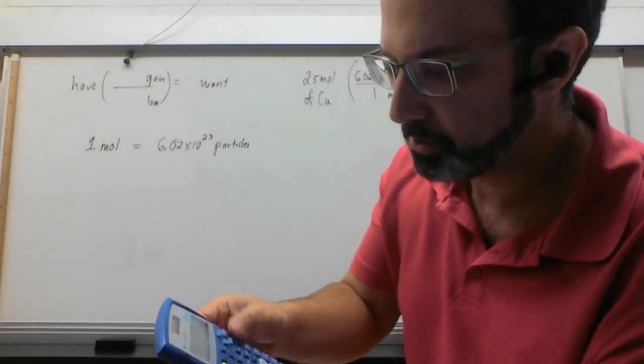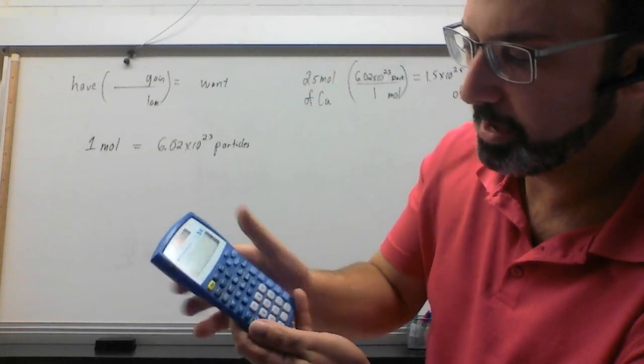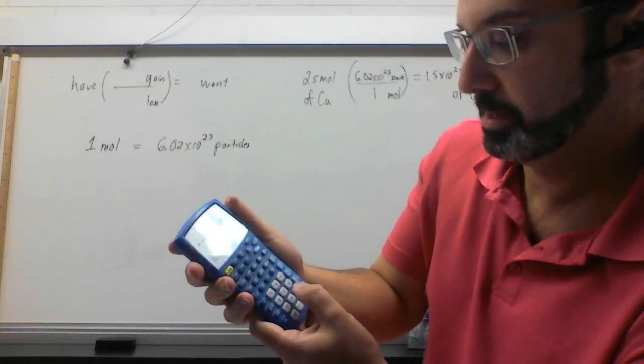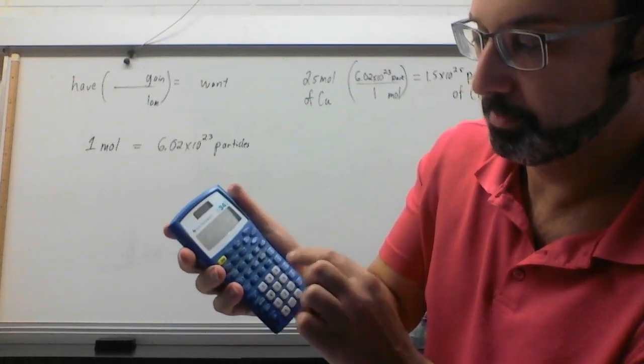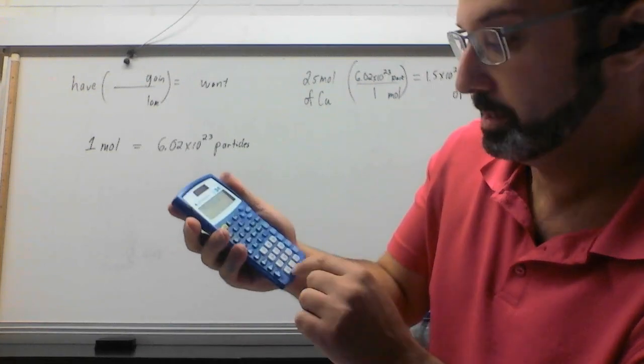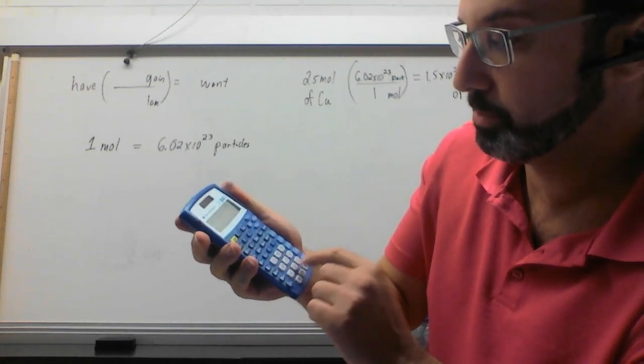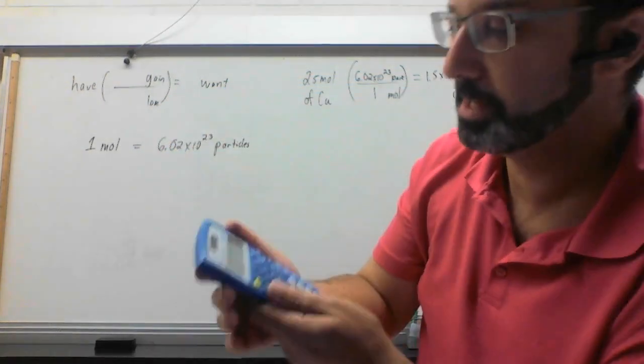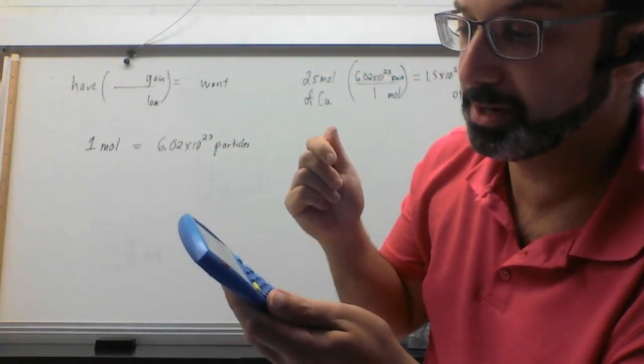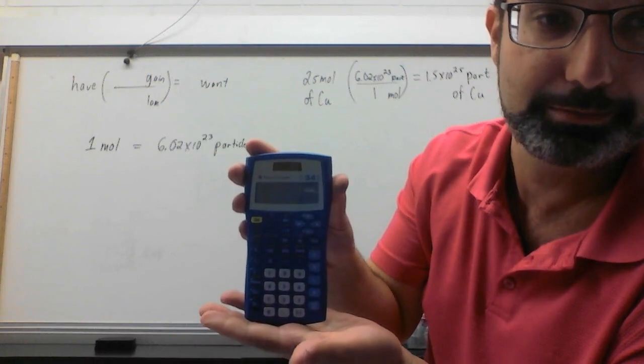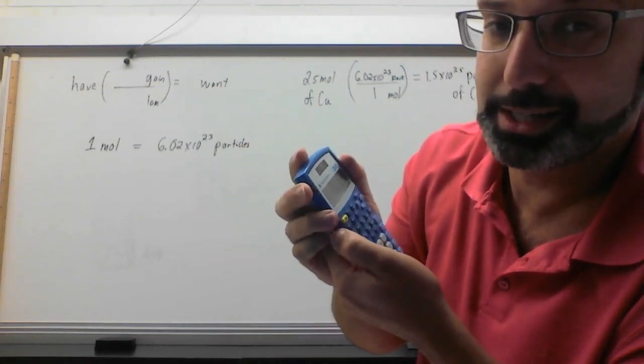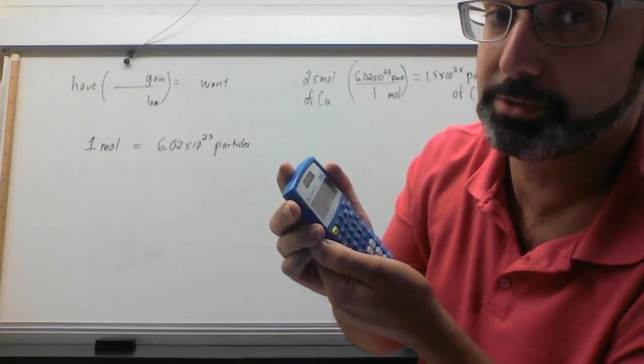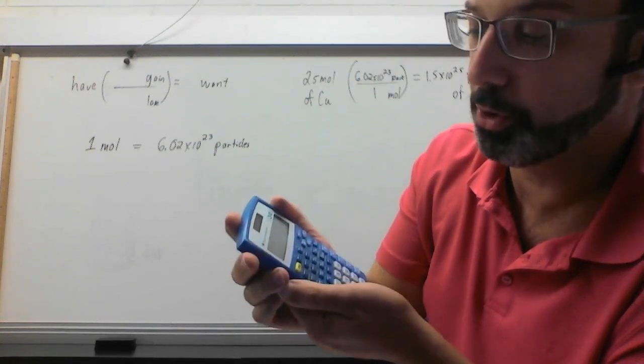Now, what was I meaning? Okay. So if we clear this. Let's say I go 25 times 6.02 times 10 to the power of 23. This is another way of trying to write it. Now, every calculator is a little different. This one here, it'll work out fine. No big deal.